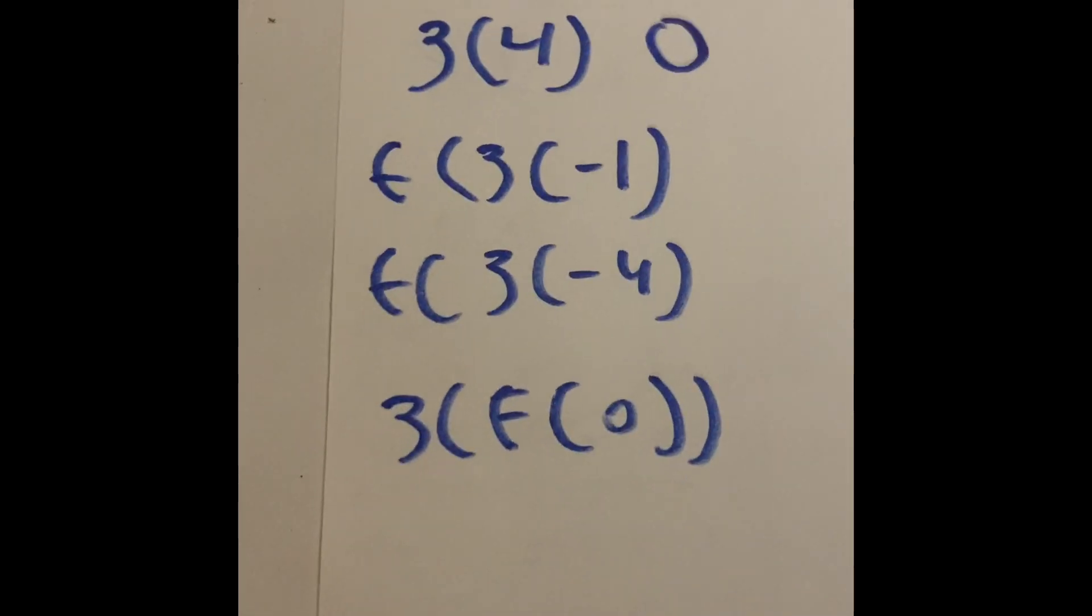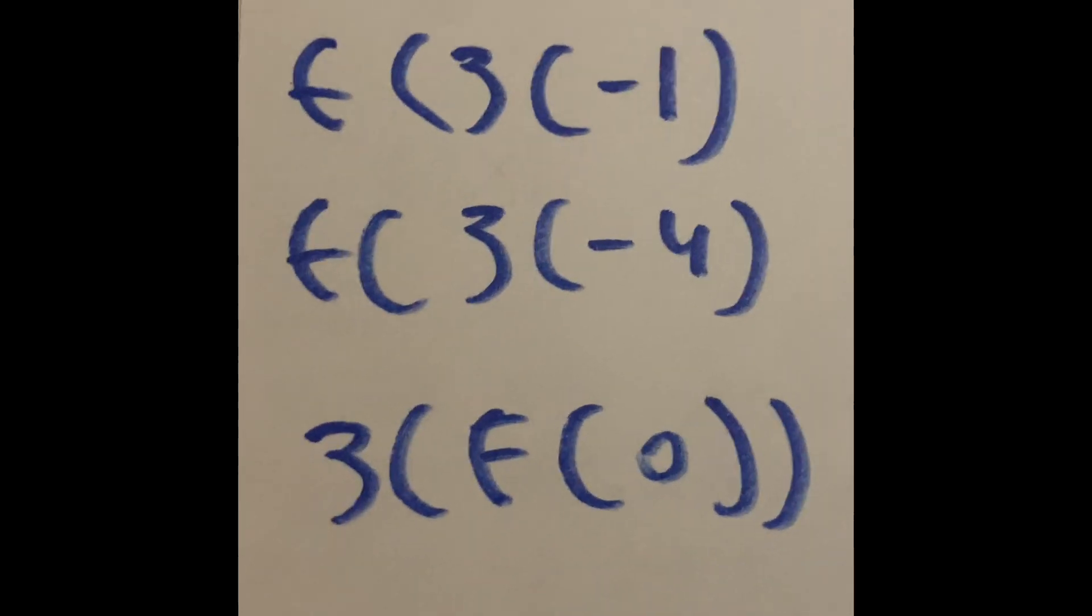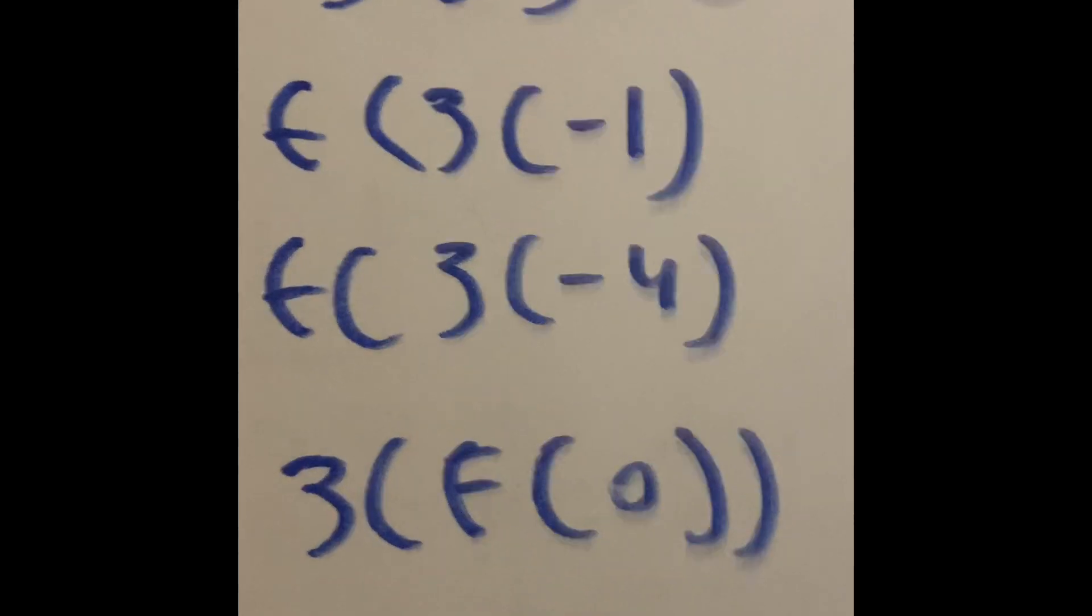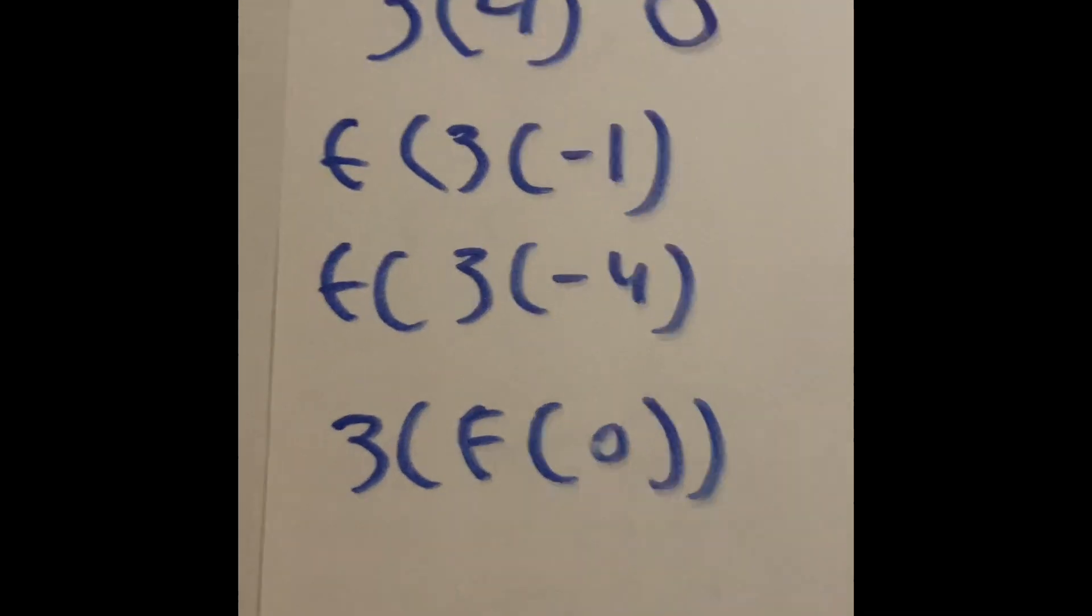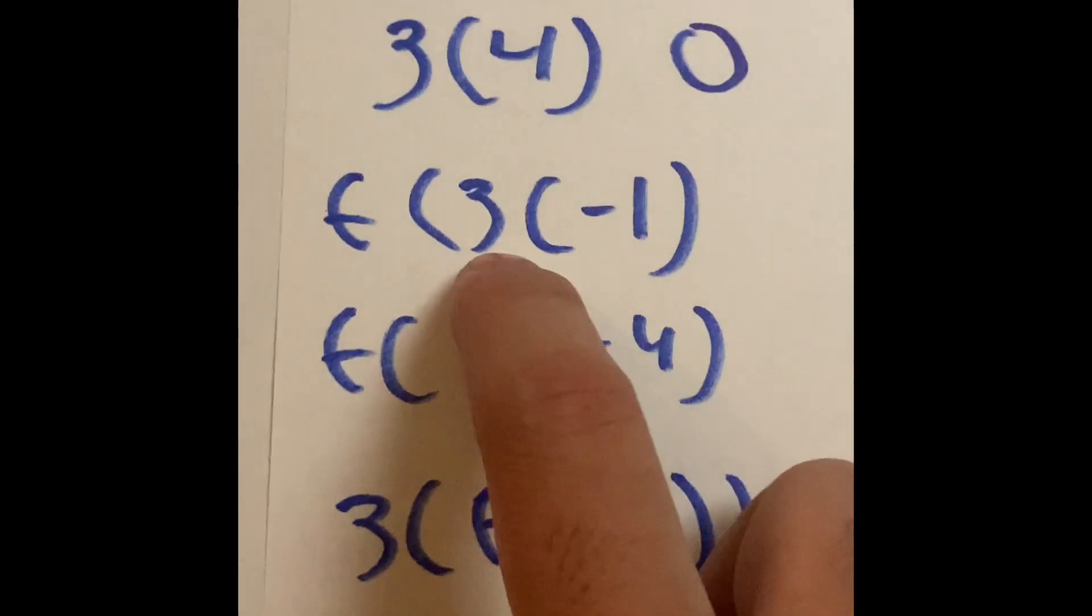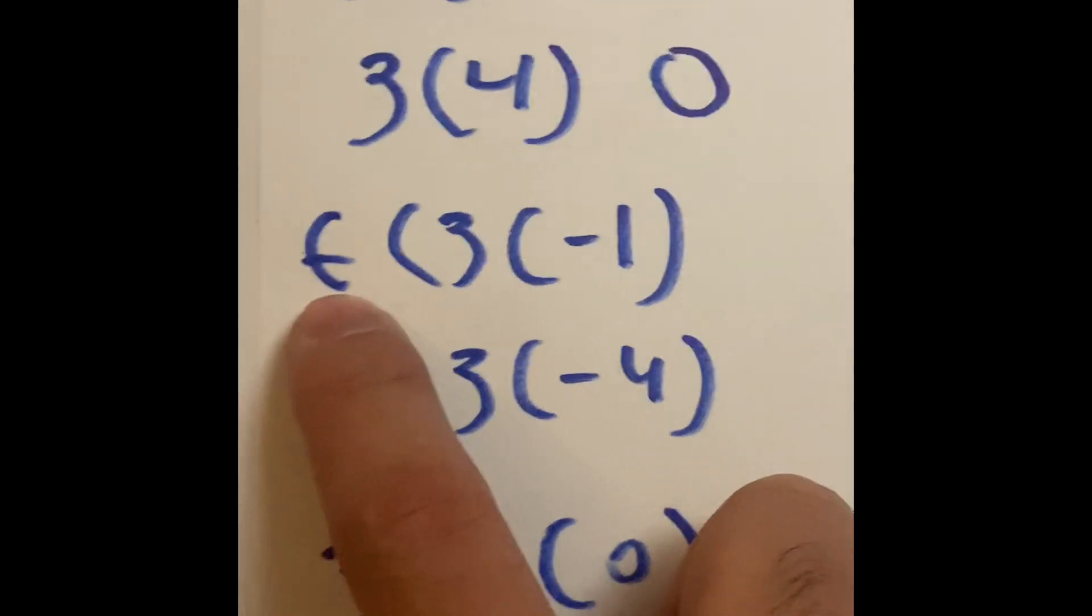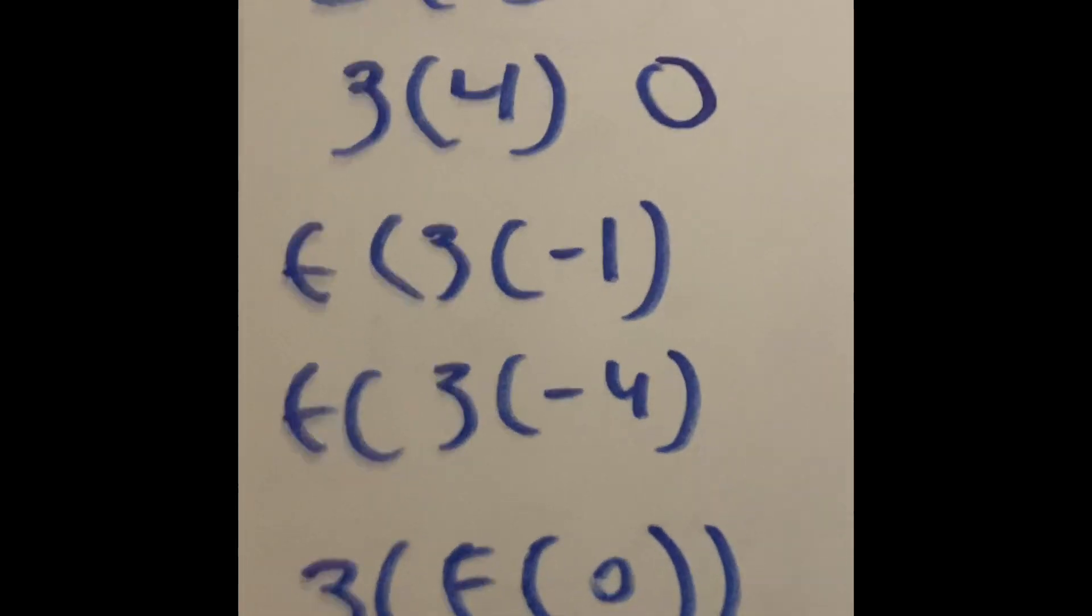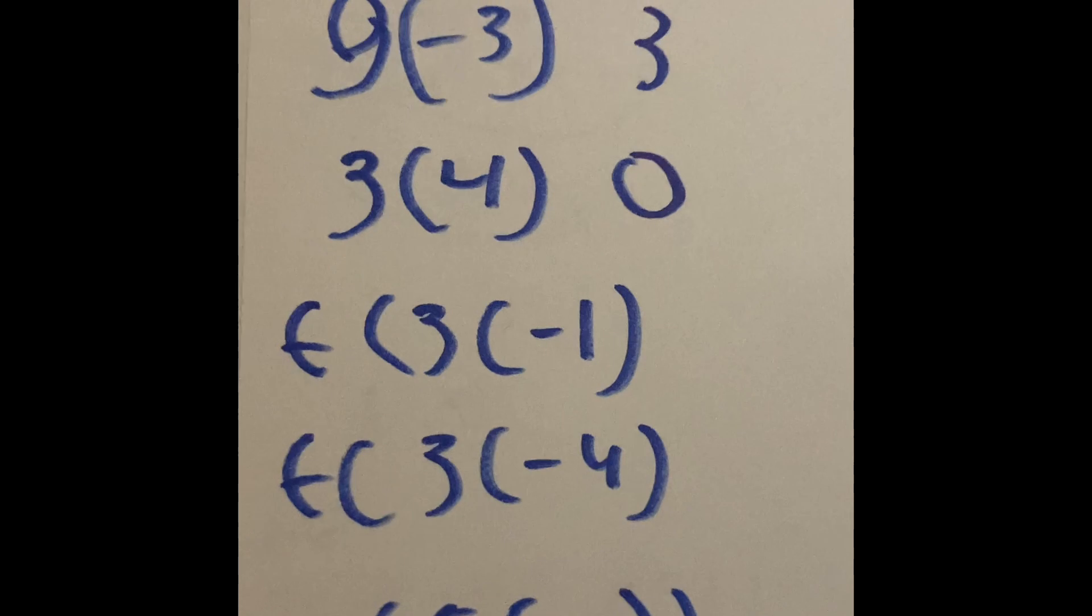But uh-oh, the next one is a little bit more complicated. We have a double function, a function inside a function. Well, here's what we're going to do. You know how we usually start with the inside function first, and when we get to an answer, we find the function on the outside? Well, that's what we're going to do. So we have the function of f, the function of g of negative one.